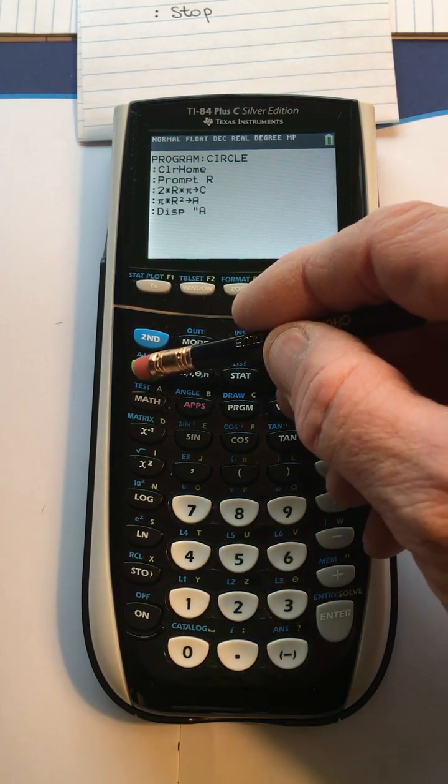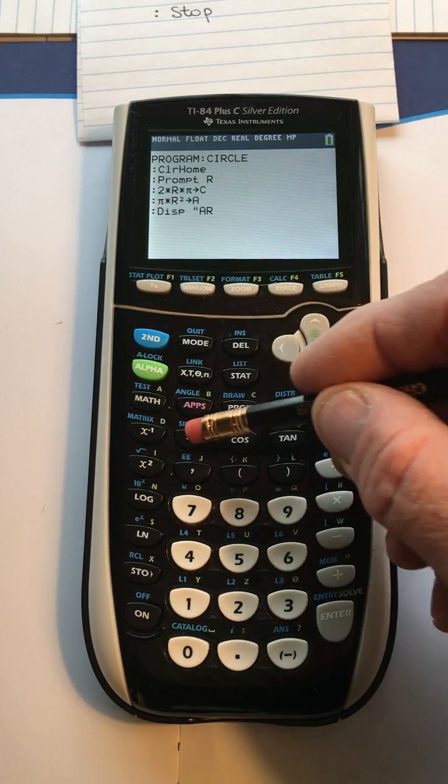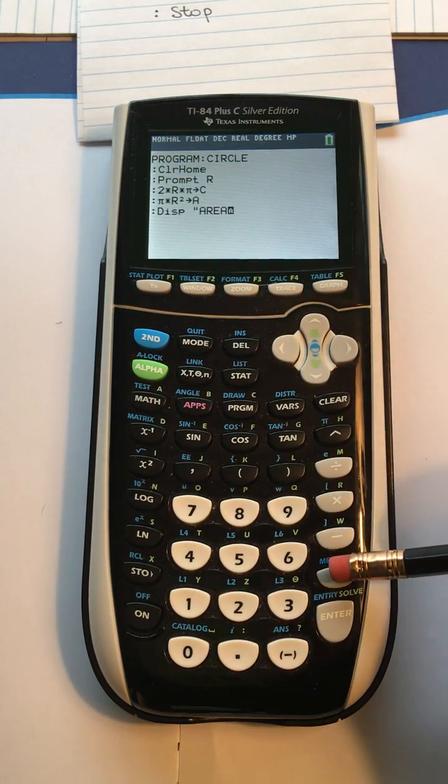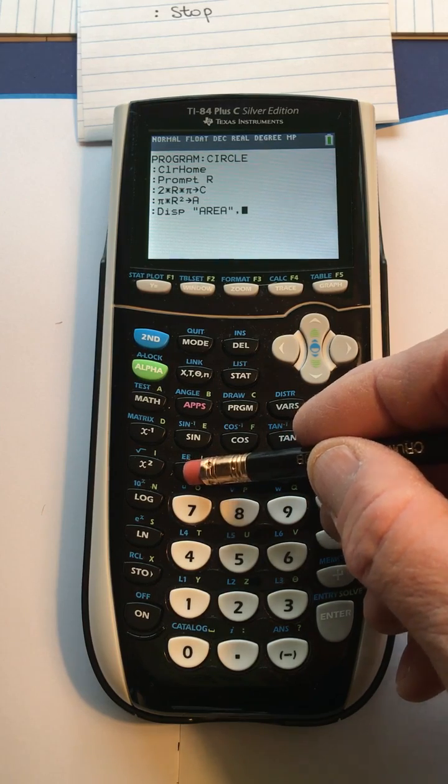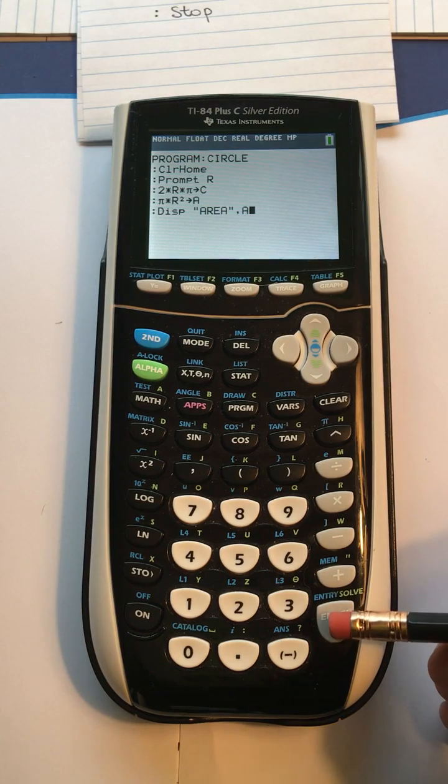Alpha A, alpha R, alpha E, alpha A, alpha quotes, and then comma, it's above the seven, and then alpha A. That completes that line.